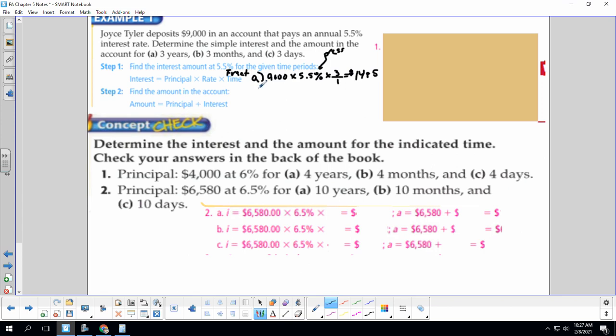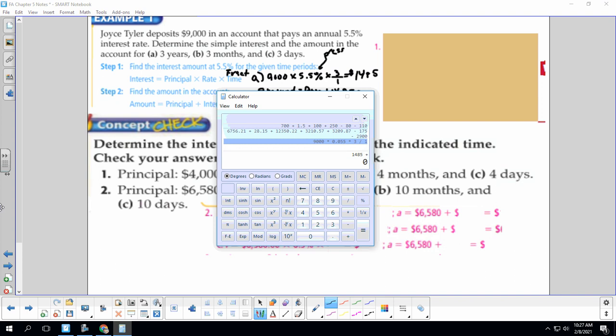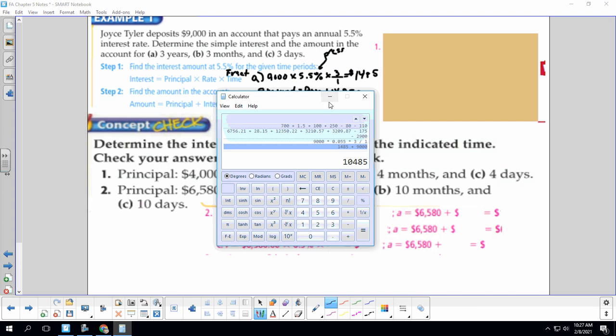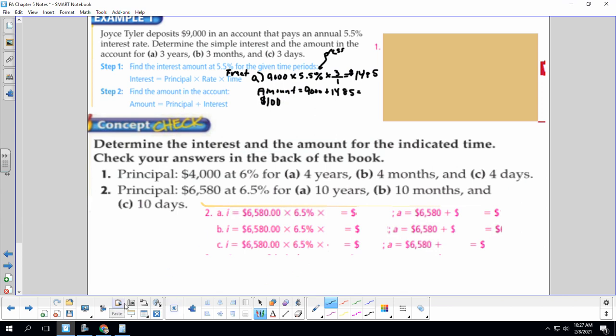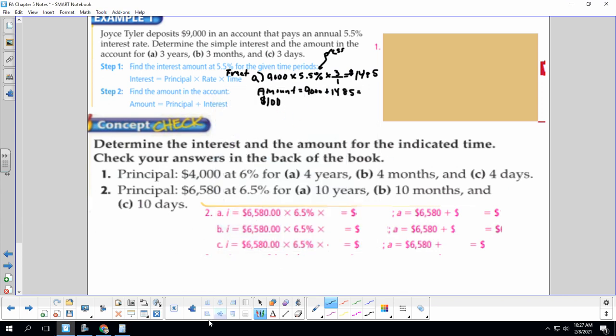But we have to find the amount that's now in our account. So we're going to add 9,000 plus our $1,485, which is $10,485.